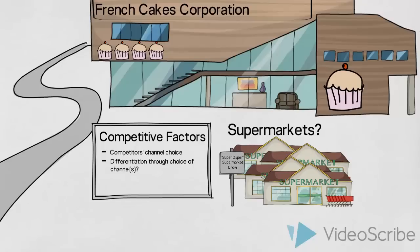Distributing the products through this chain would, therefore, enable them to differentiate from the competition, and ultimately have a better chance of selling their products to the end consumers. So, our recommendation for French Cakes Corporation would, in addition to the other already mentioned factors, also depend on their answers to these questions about the competitors.